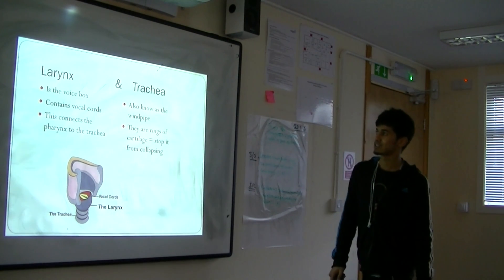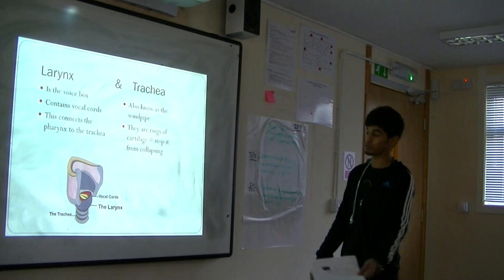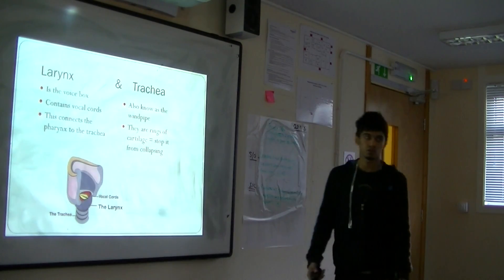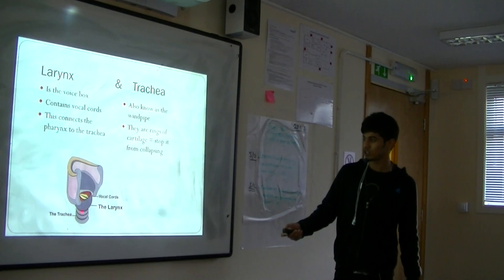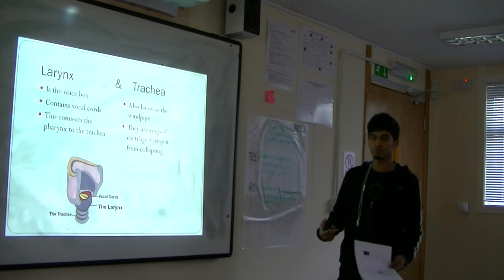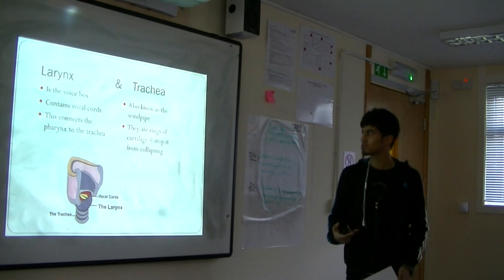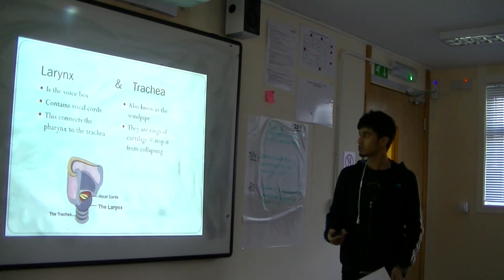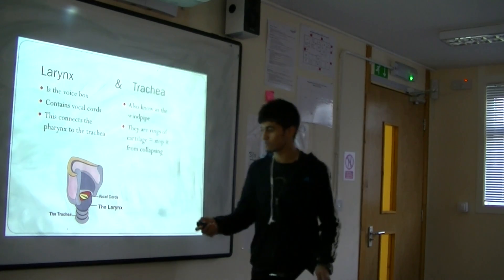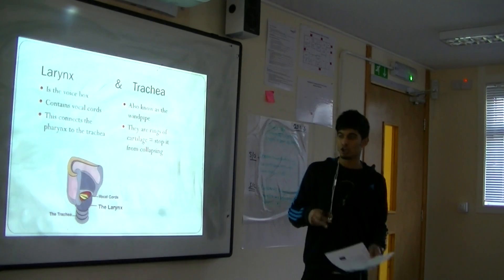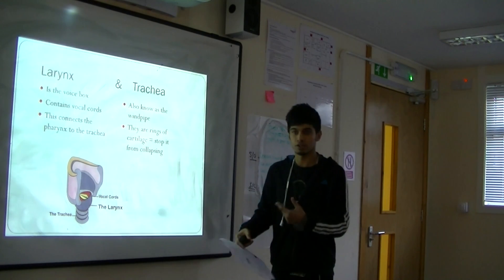The larynx is the voice box, which controls our speech. It contains vocal cords. This connects to the trachea, which is the main airway pipe. The trachea breaks down into the bronchus, bronchioles, and further branches. Within the trachea, there are rings of cartilage which help keep it open so it doesn't collapse.